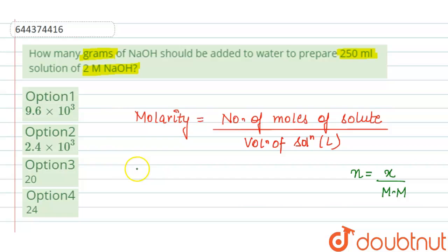So the molarity, if we put it here, will be x divided by the molecular mass times the volume of solution in liters. In the question, it is given the molarity is 2 molar, or we can write 2 moles per liter.